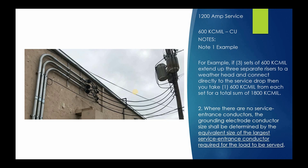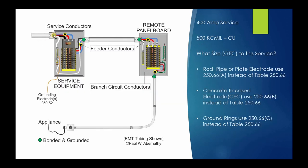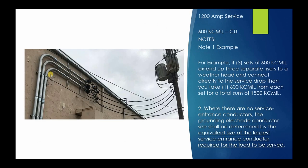Now let's move on to the notes. We already covered Note 3, which deals with aluminum or copper-clad aluminum termination within 18 inches of the earth. Note 1 addresses what happens when you have multiple sets of conductors — whether from service drops, service laterals, or overhead service conductors. For example, a 1200 amp service utilizing three sets of 600 kcmil. You'd have A, B, and C phases in each of three raceways, each conductor being 600 kcmil. You take just phase A: 600 plus 600 plus 600 equals 1800 kcmil. That's your largest service conductor equivalent for sizing purposes.